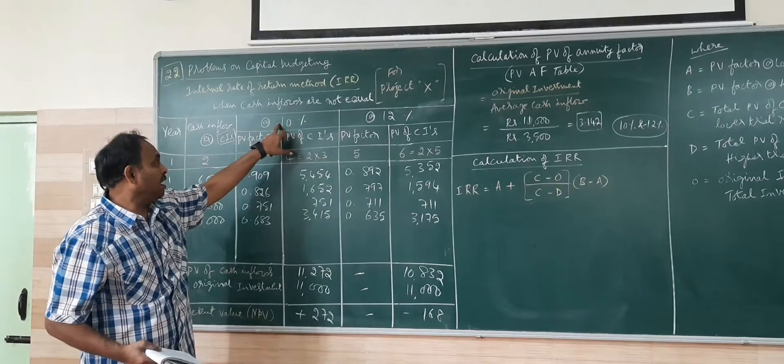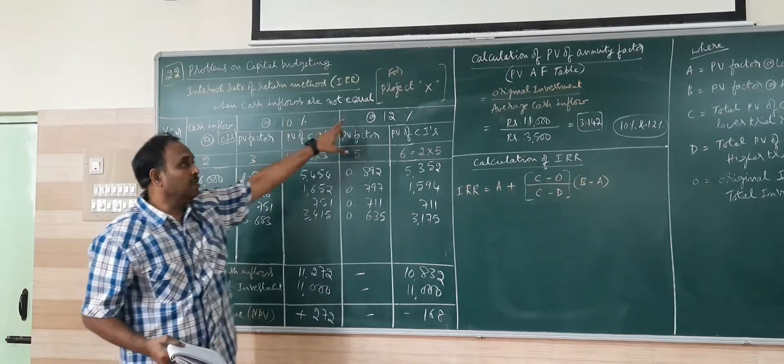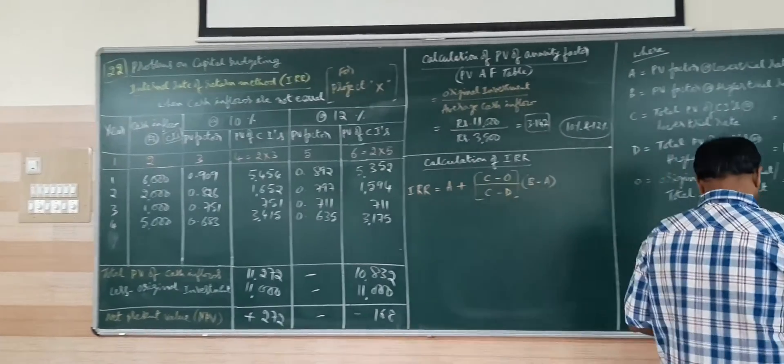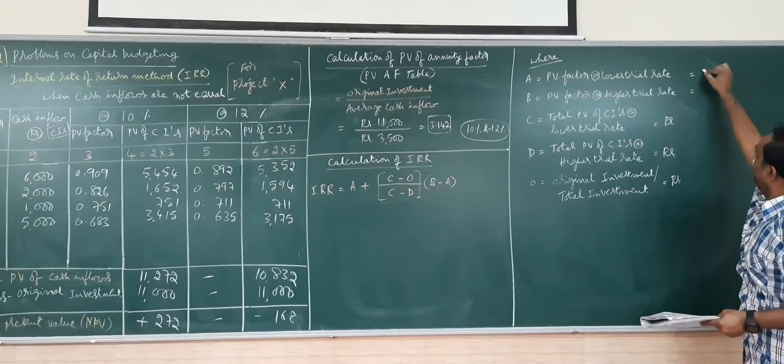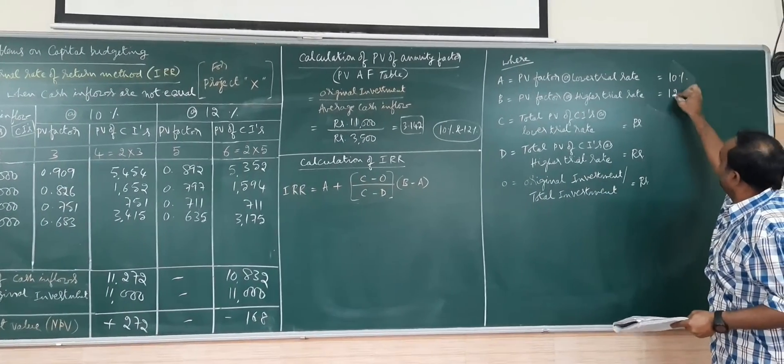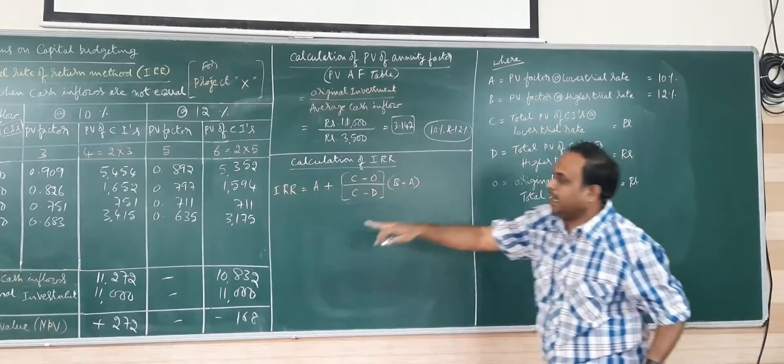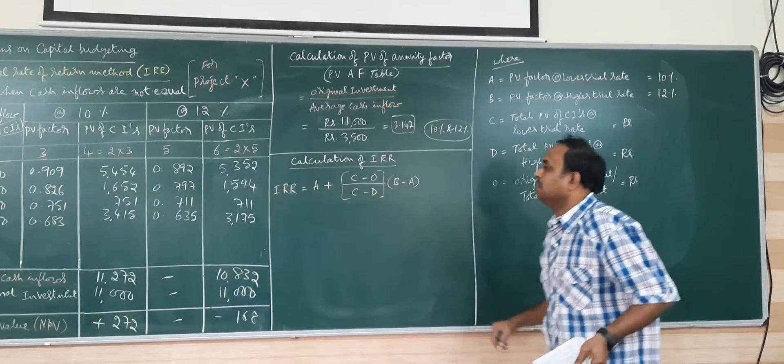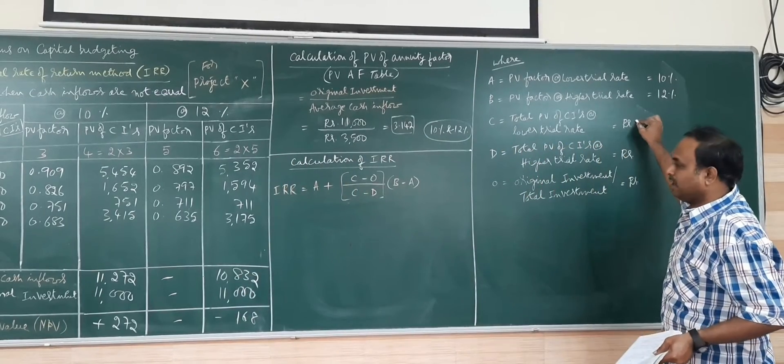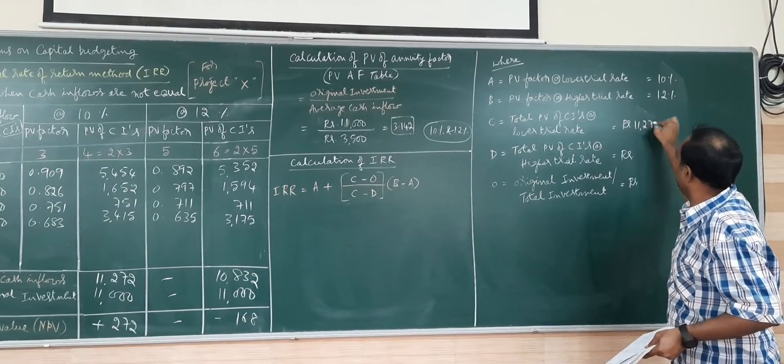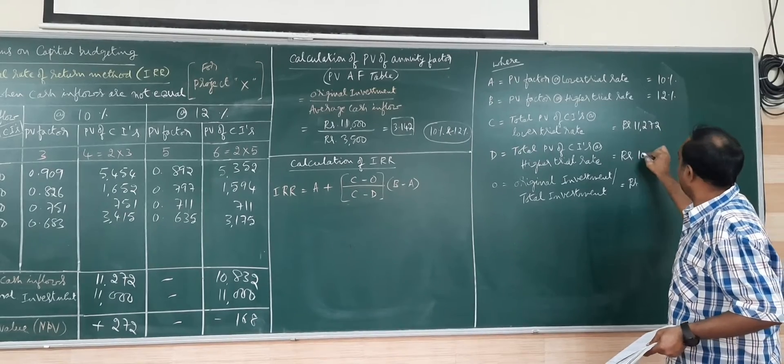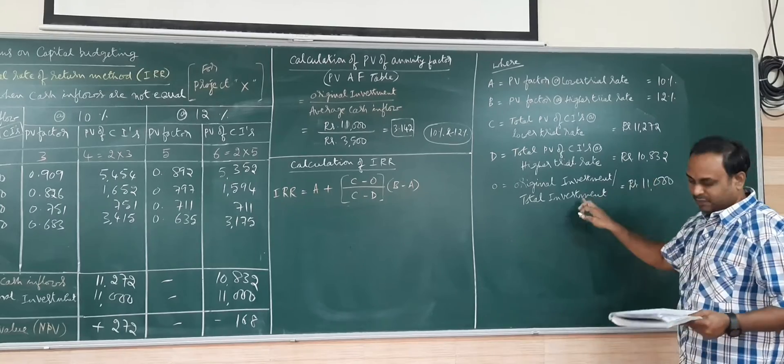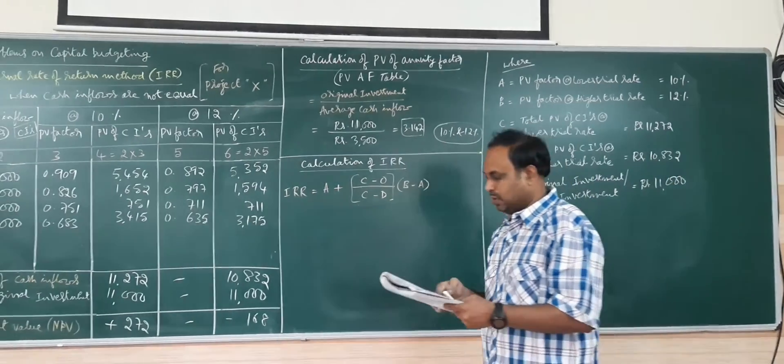I can take lower trial rate as 10 percent, higher trial rate as 12 percent. Lower trial rate 10 percent, higher trial rate 12 percent. The PV of cash inflows for both: the lower trial rate 11,272 and higher trial rate 10,832. Initial investment both 11,000.